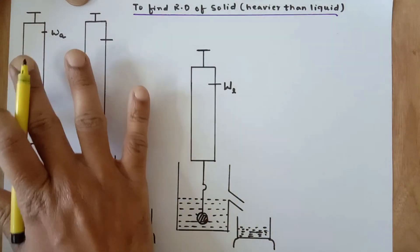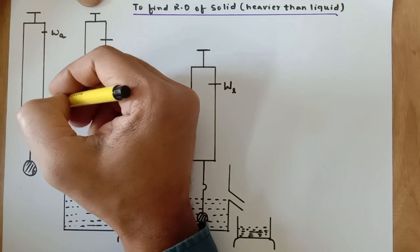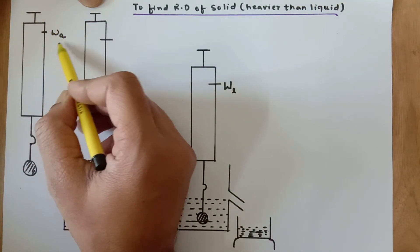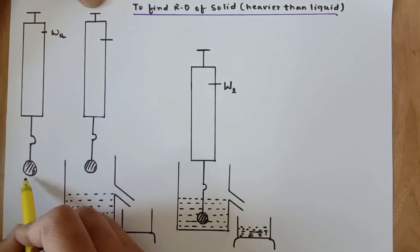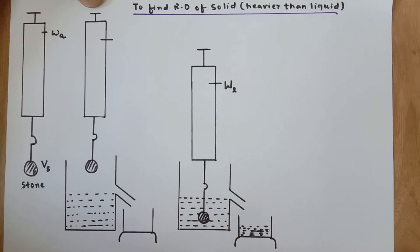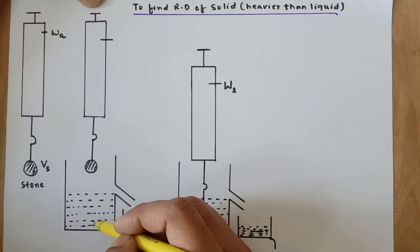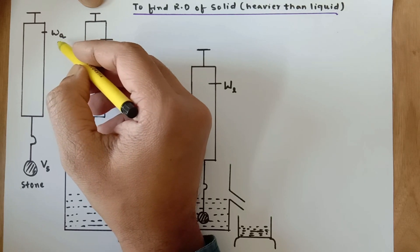First of all, for this experiment we would be requiring a spring balance. The spring balance actually measures the weight of the object. This is, say for example, a stone and the volume of the stone is Vs. Since this stone is heavier than the water it is going to sink in the water. Its weight in air is Wa.